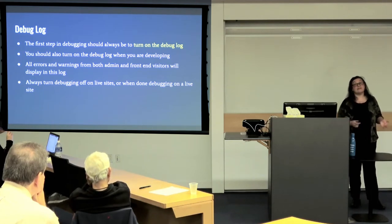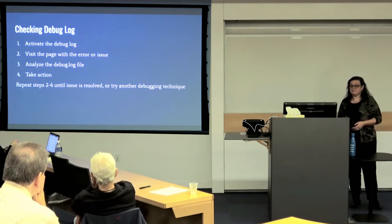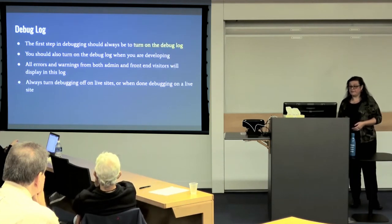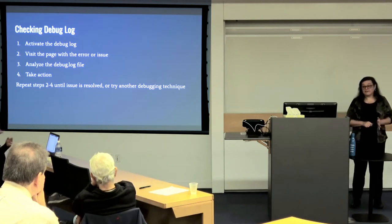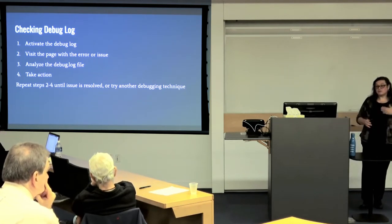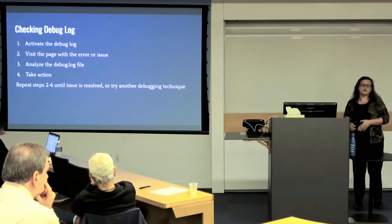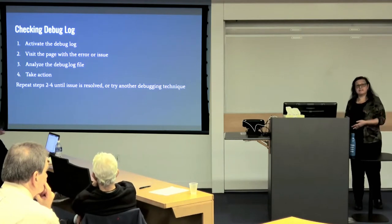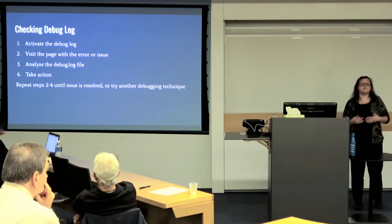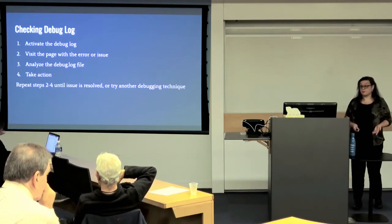One big note: always turn off debugging on your live sites. If you have to debug on a live site, make sure you turn it off when done. Checking the debug log is a simple process: activate the debug log, then visit the page that has the error, look at the debug log and analyze what you see to pick an action to take, and if that doesn't work, repeat steps two to four until you find what does work.